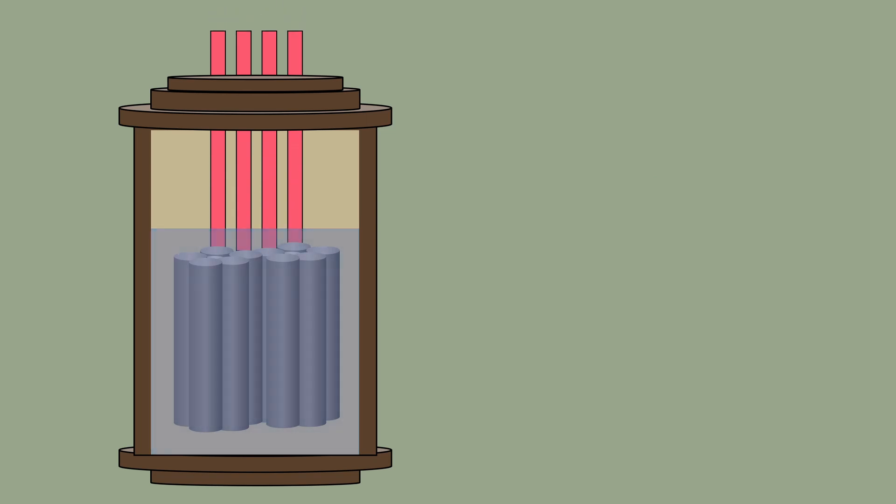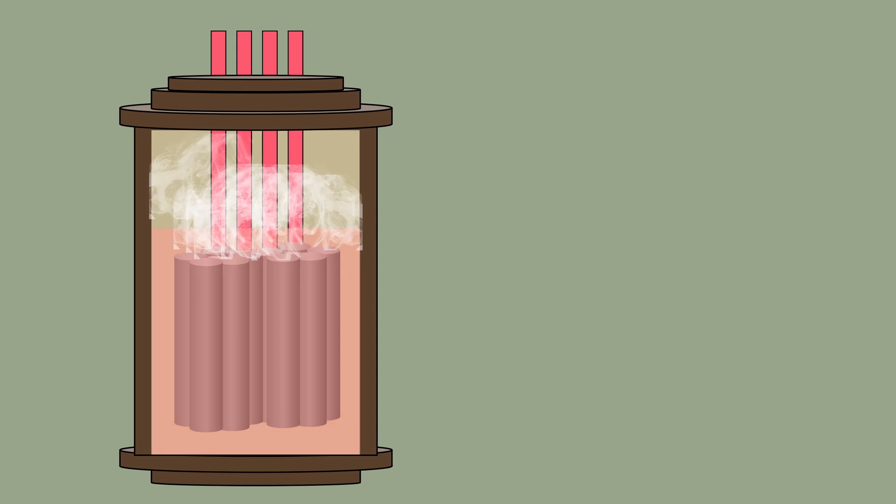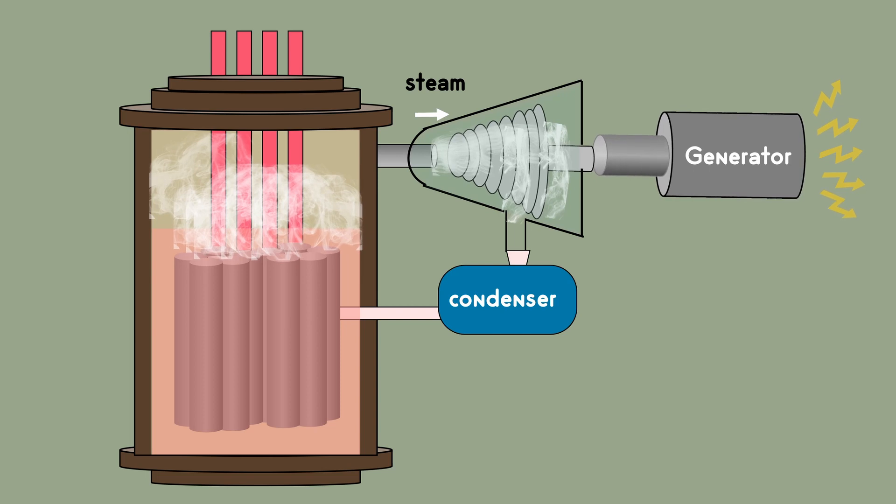The heat energy released during this fission reaction heats up the water in the reactor vessel, generating steam. This steam turns the steam turbine, which is coupled with the generator that generates electricity.